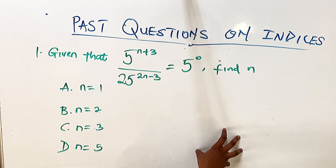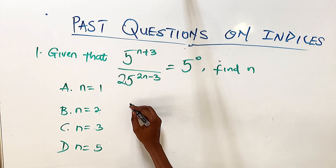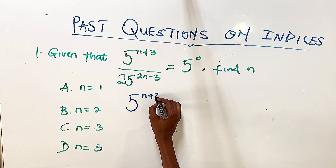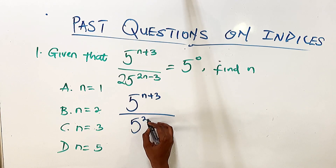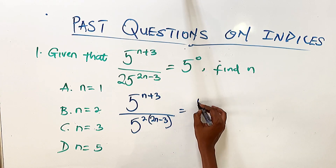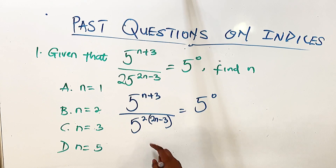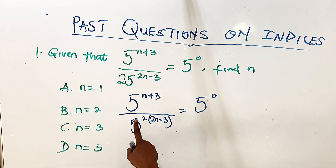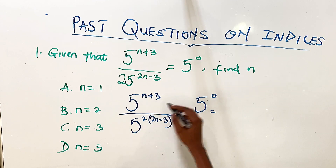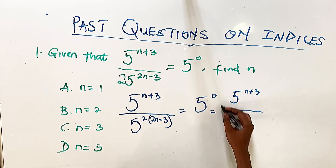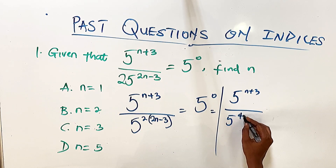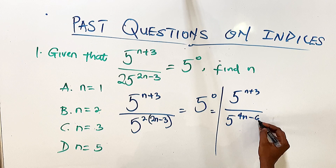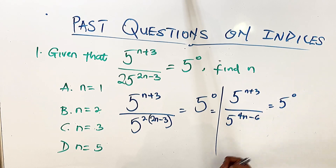The first term becomes 5 raised to power n plus 3, all over 5 raised to power — note that 25 is 5 squared, so that power is now multiplying the other power already there. Expanding, we get 5 raised to power n plus 3, all over 5 raised to power 4n minus 6, equal to 5 raised to power 0.